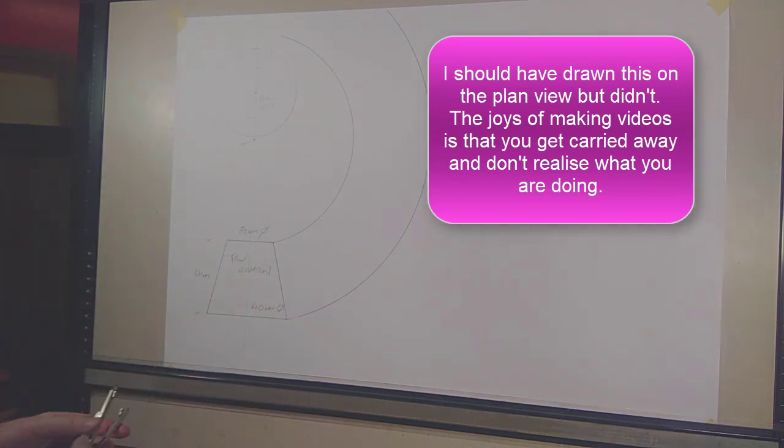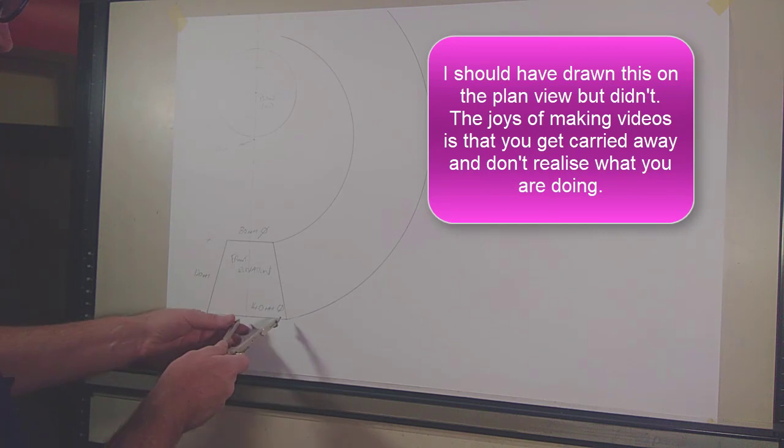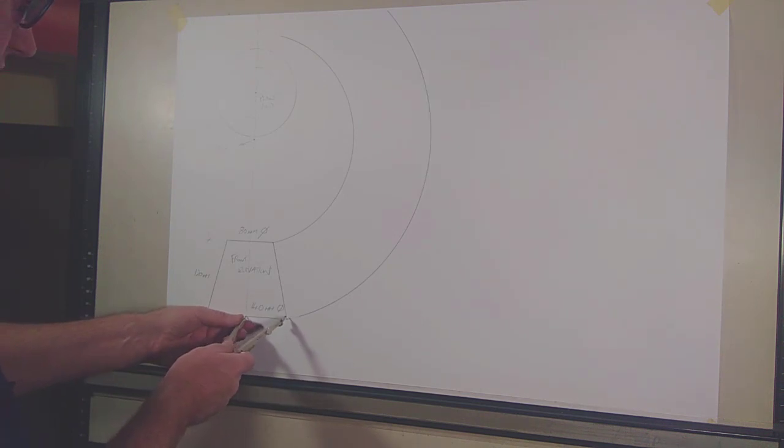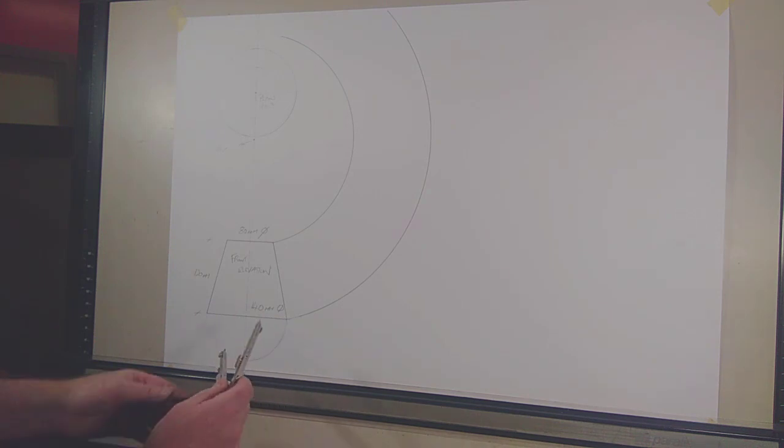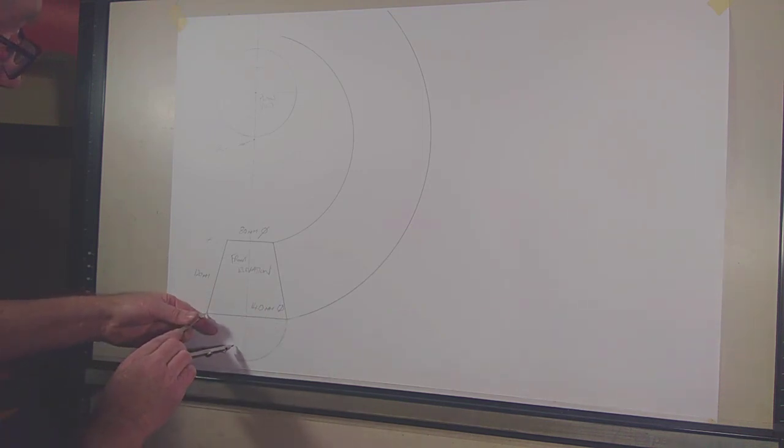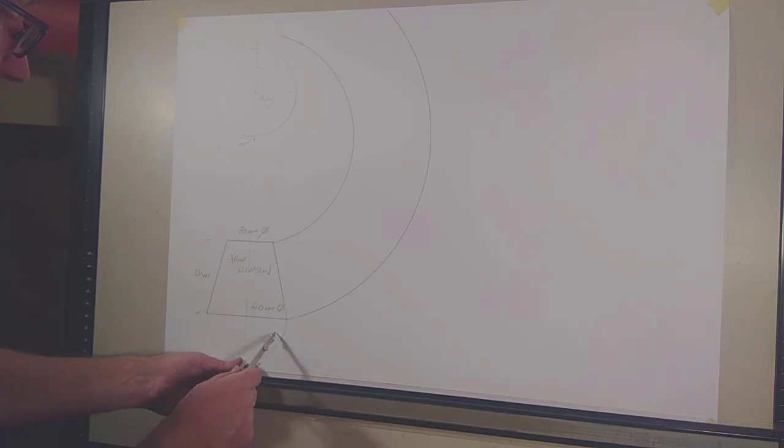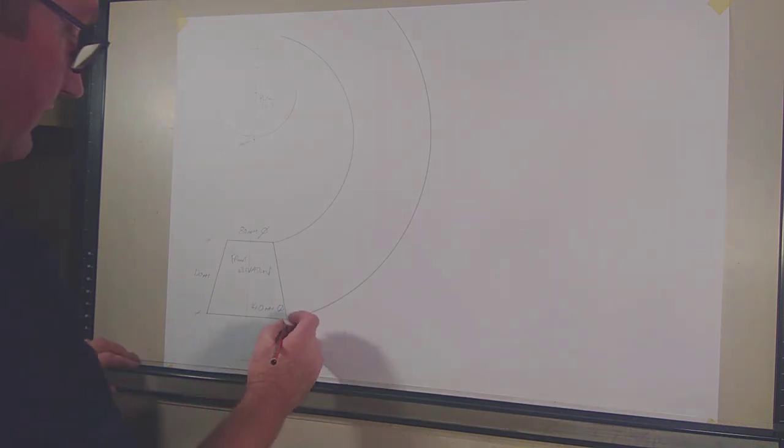So I need to set my dividers to 70 millimeters and draw a semicircle on the bottom here. Using that same radius, I step the dividers back to this corner and strike off the length, same on the other side.